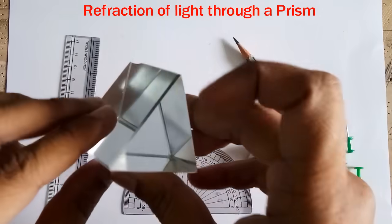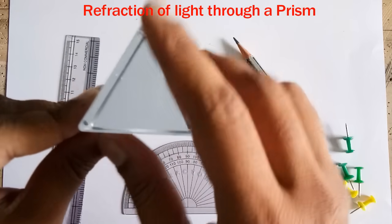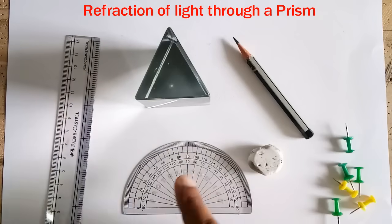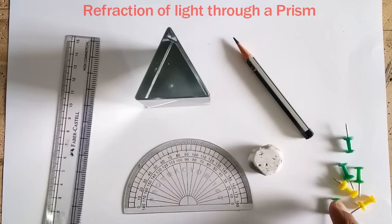Here we are using typically a prism whose angle of prism is 60 degree equilateral prism and protractor, scale, few softboard pins, eraser and pencil.